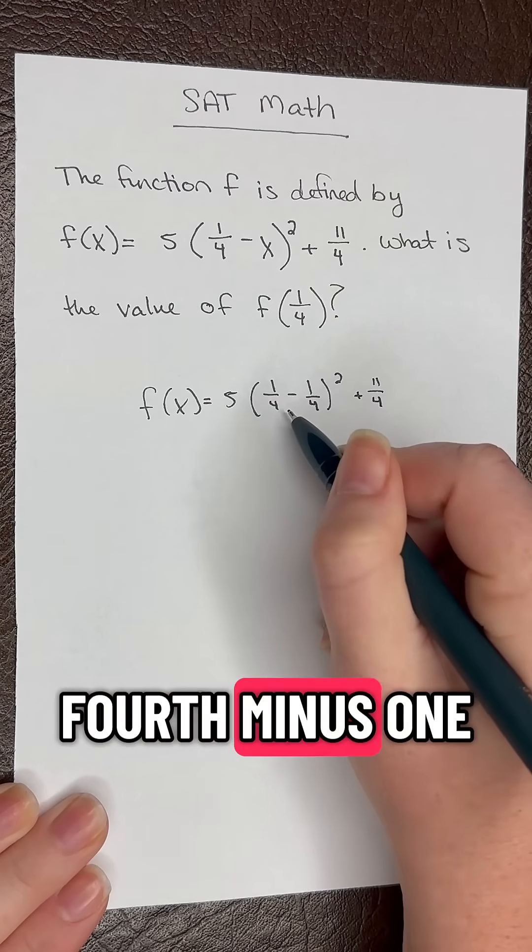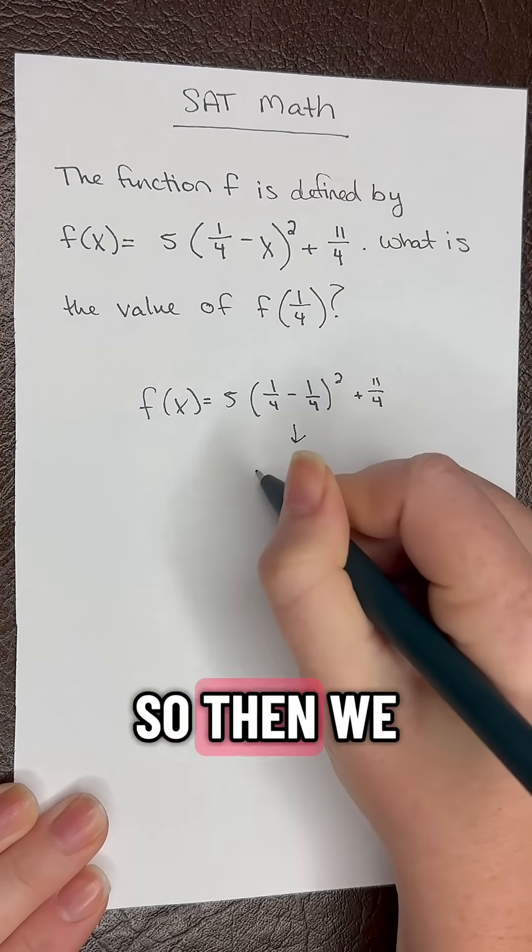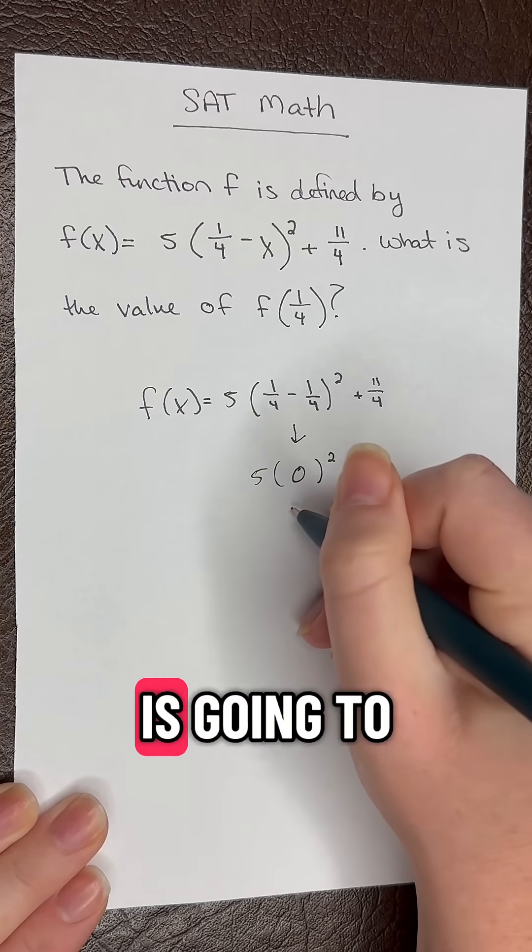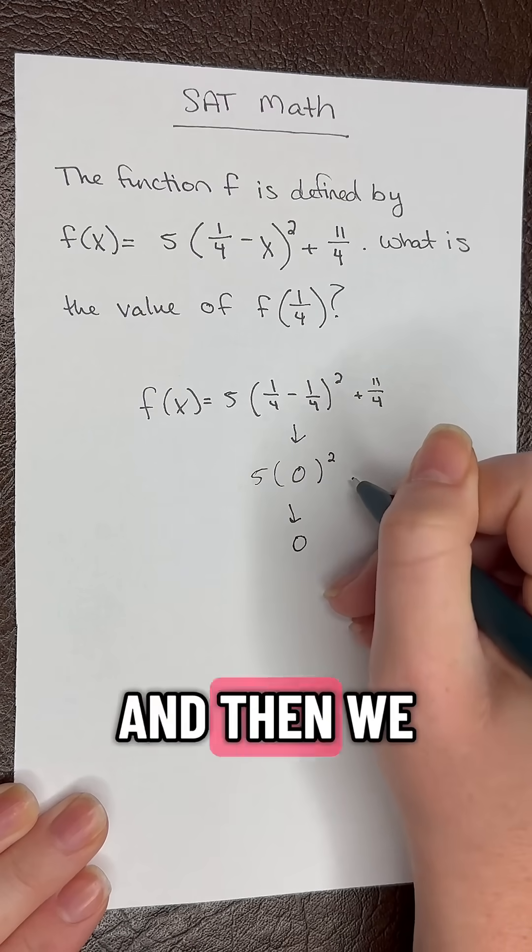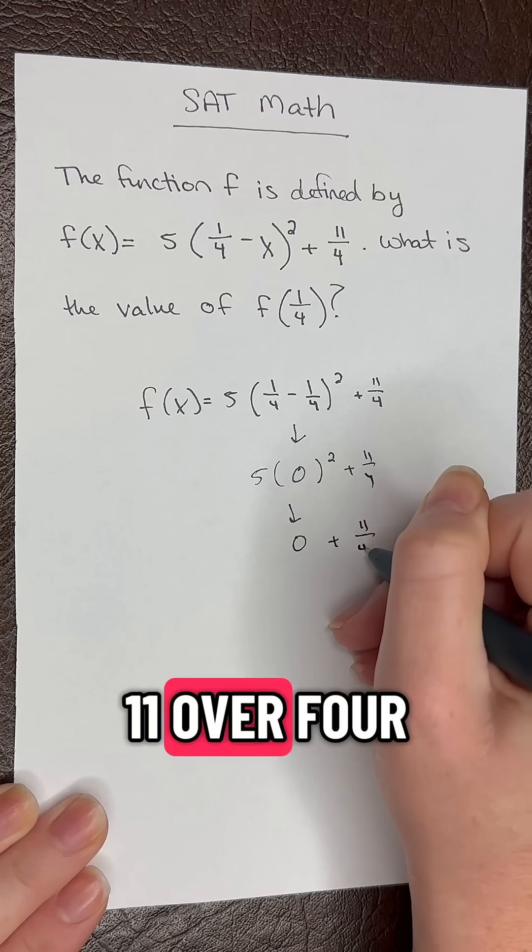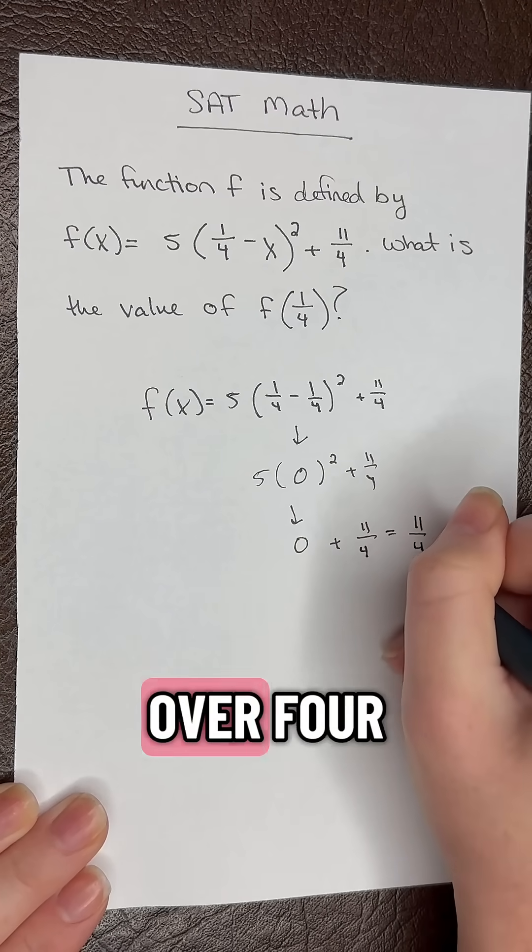So 1 fourth minus 1 fourth here is going to give us 0. So then we have 5 times 0 squared. This all is going to zero out. And then we still have plus 11 over 4. So our final answer is going to be 11 over 4.